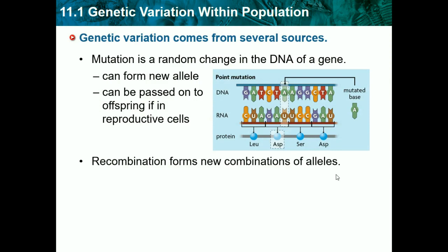Recombination forms new combinations of alleles. Mutations are a random disorder in our DNA and can cause a change in our phenotype. For example, blue eyes was a mutation that happened to get passed down, adding another allele to our gene pool.